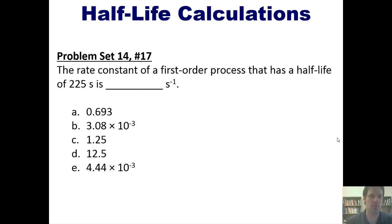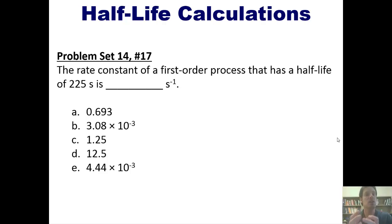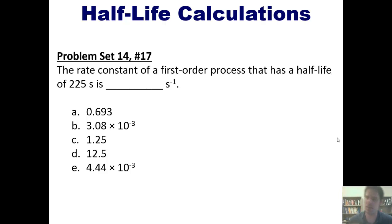Let's take a look at a problem. The rate constant for a first-order process that has a half-life of 225 seconds is what? You're welcome to pause the video here, attempt to do it on your own, and then hit play and watch me do it for you.